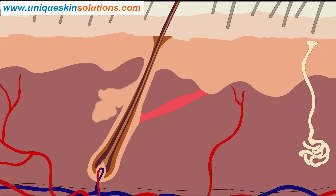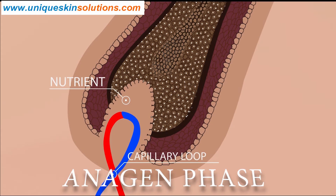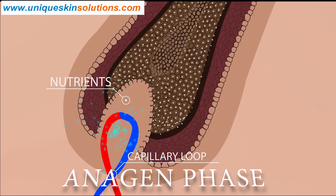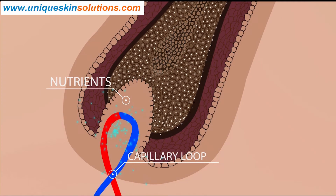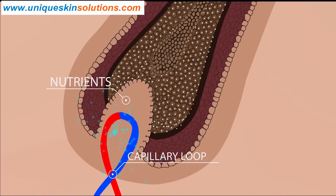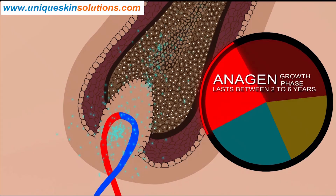Cells of the hair matrix, responsible for hair growth, receive nutrients from the capillary loop from the dermal papillae. During the anagen phase or growth phase, the hair matrix actively proliferates new cells, which are continuously produced. New cells are pushed upward and they differentiate to produce the hair shaft.